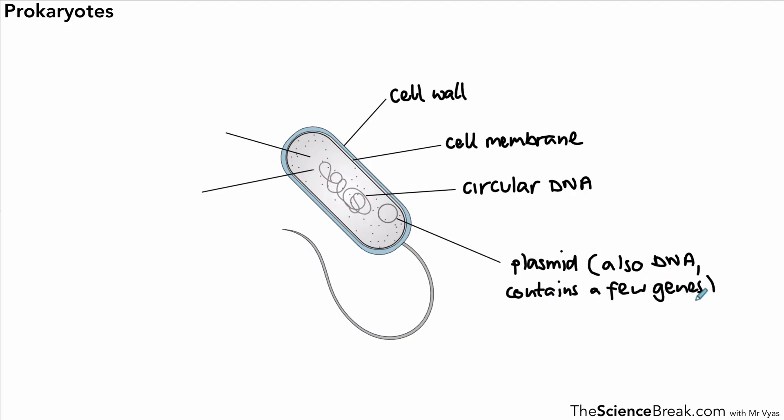We then have the ribosomes—the small dots you can see—and then the cytoplasm as in the other two cells. We also have something called a flagellum. It's like a tail and it helps with movement. That's our prokaryotic cell, and you should be able to label those different parts.